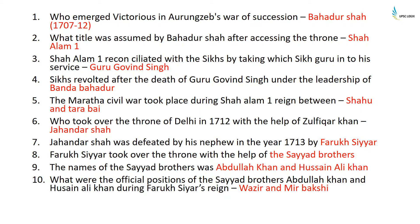Who emerged victorious in Aurangzeb's war of succession? It was Bahadur Shah I, who ruled from 1707 to 1712. The title assumed by Bahadur Shah after ascending the throne was Shahalam I. Shahalam I reconciled with the Sikhs by taking Guru Govind Singh into his service. Sikhs revolted after the death of Guru Govind Singh under the leadership of Banda Bahadur. The Maratha civil war took place during Shahalam I's reign between Shahu and Tarabai. Jahadar Shah took over the throne of Delhi in 1712 with the help of Zulfikar Khan.